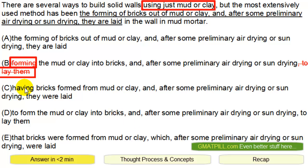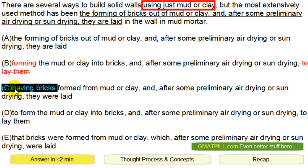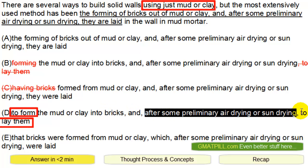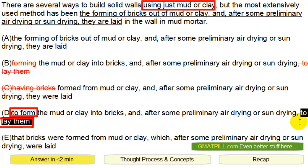So 'to lay them' is inconsistent with 'forming.' What about C? The most extensively used method has been 'having bricks' — that's awkward. 'Has been to form' — okay, that's good. So one method is to form the mud or clay into bricks and, after blah blah blah, to lay them.